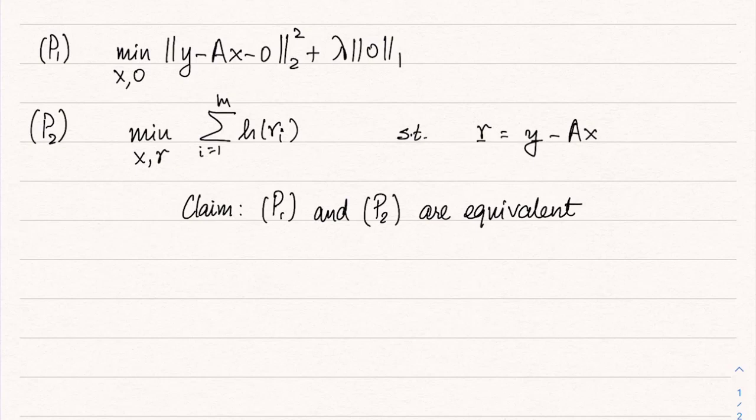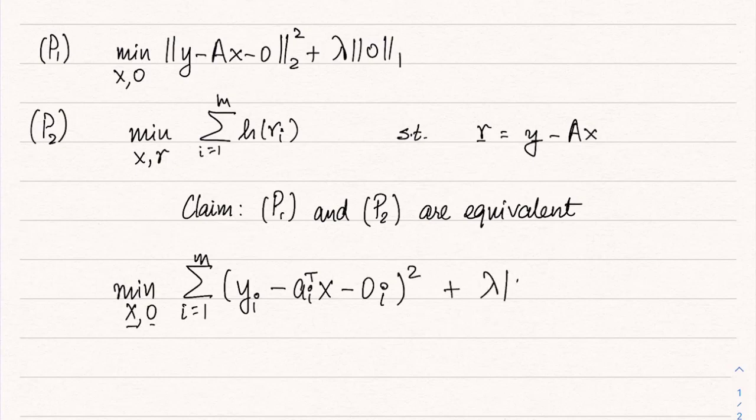Now to see that, let us begin by considering the first formulation. So let us write it as minimization over X and O, and let us expand this part: sum from i equals 1 to M of (y_i minus a_i transpose X minus O_i) squared plus lambda times absolute value of O_i.